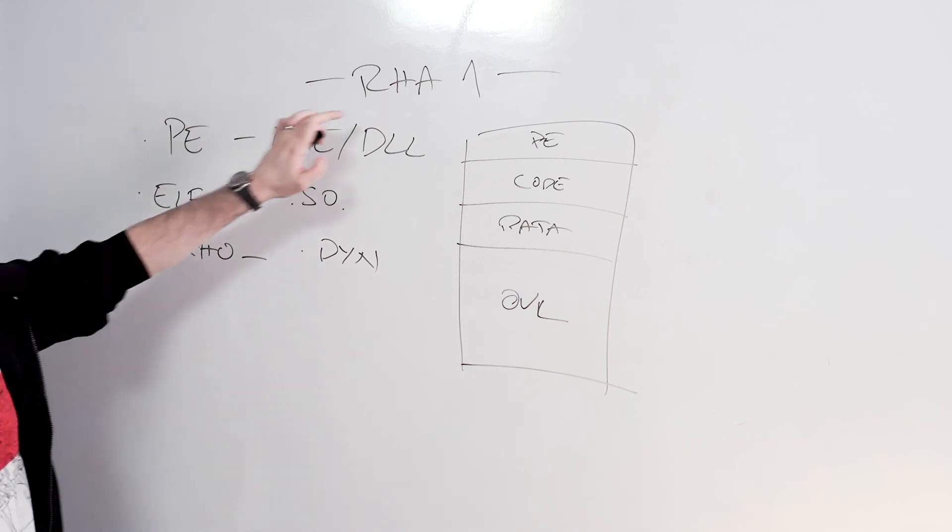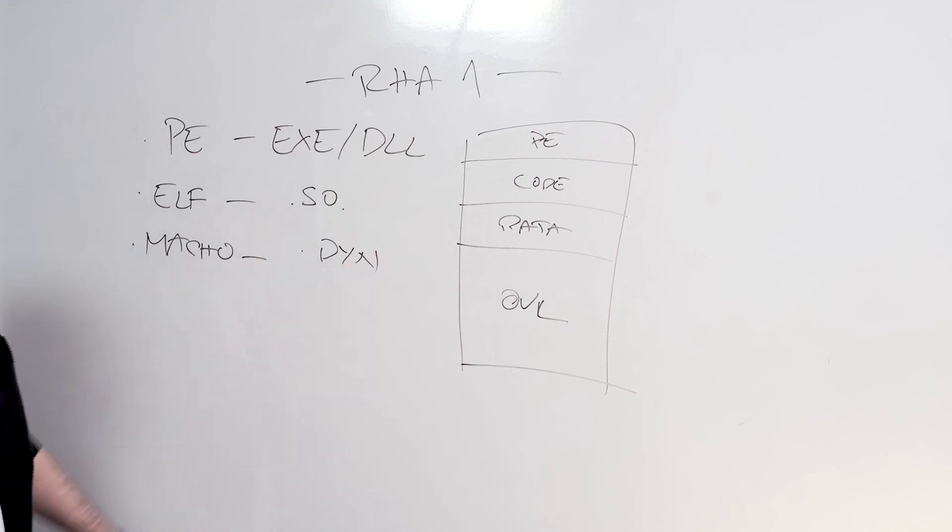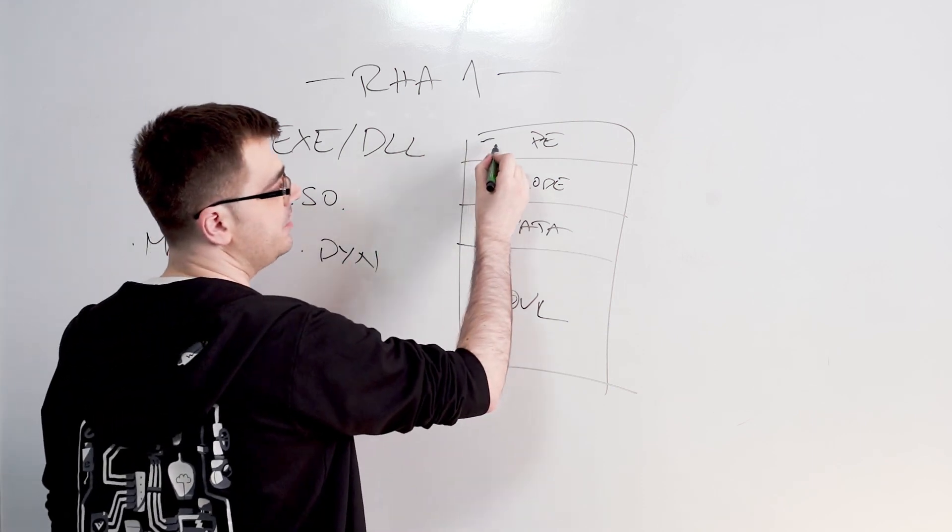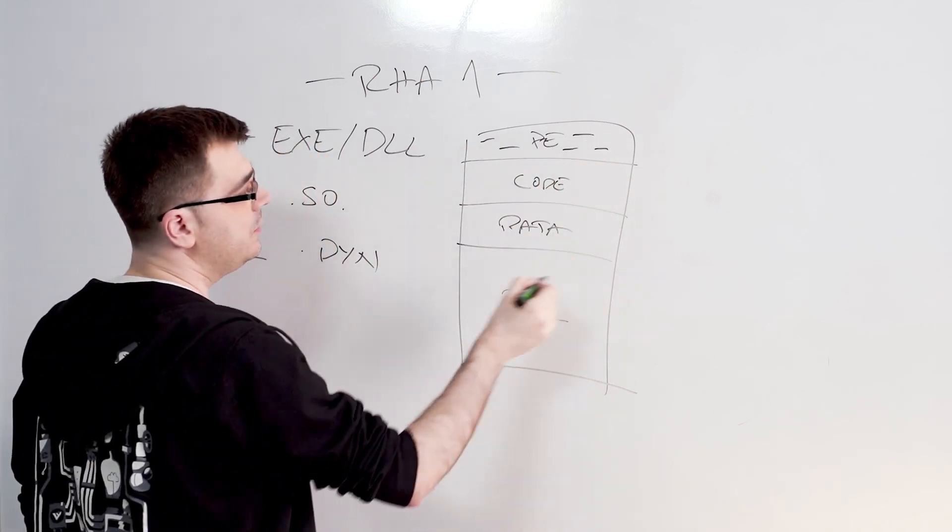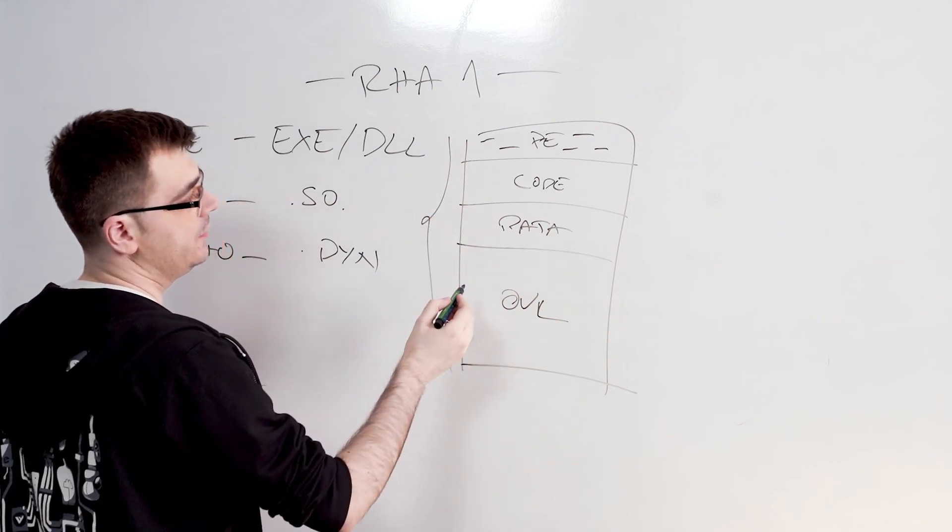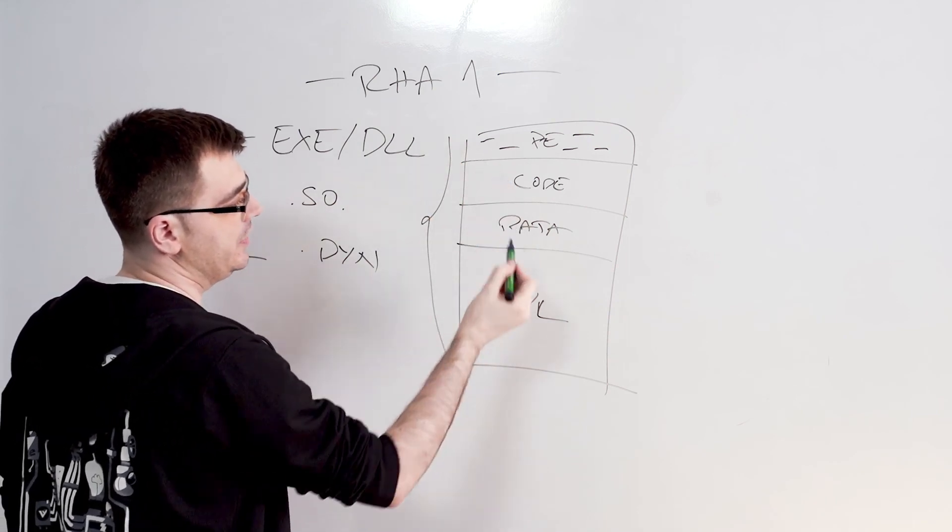What RHA1 for these particular executable types will do, it will look at the header information, just the bits of the header information. It will look at how the file is laid out. What comes before? Is it code? Is it data?